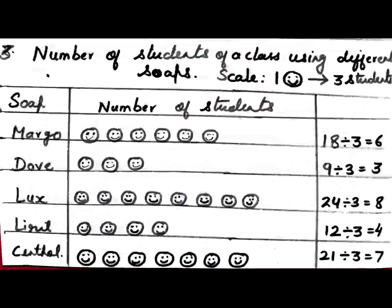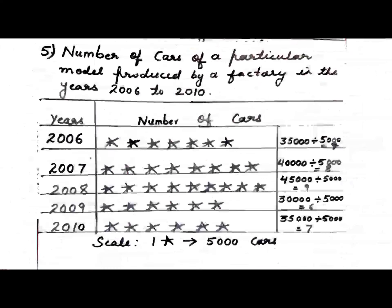Next example: number of students in a class using different brands of soap. The data is: Margot — 18, Dove — 9, Lux — 24, one brand — 12, Synthol — 21. The heading is 'Number of students using different brands of soap.' The scale is: one smiley represents 3 students, as all numbers are divisible by 3. Margot: 18 ÷ 3 = 6 pictures; Dove: 9 ÷ 3 = 3; Lux: 24 ÷ 3 = 8; next brand: 12 ÷ 3 = 4; Synthol: 21 ÷ 3 = 7 smileys.